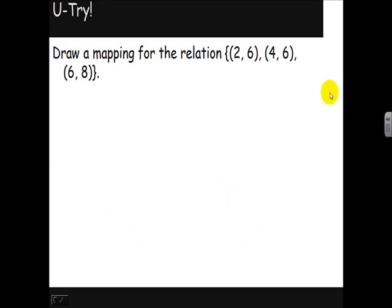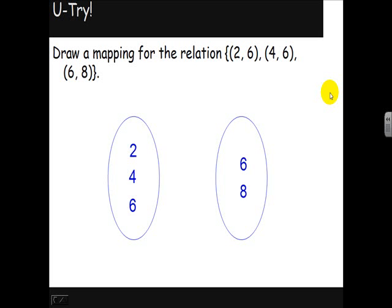You try to draw a mapping diagram of (2,6), (4,6), and (6,8). Okay, here's my two regions. My domain: 2, 4, and 6. My range: 6 and 8. 2 maps to 6, 4 maps to 6, and 6 maps to 8.